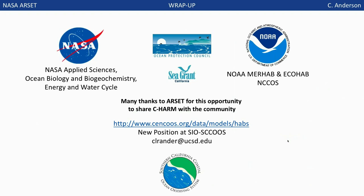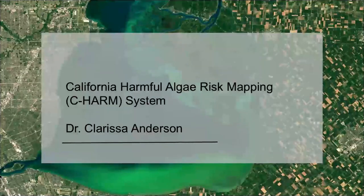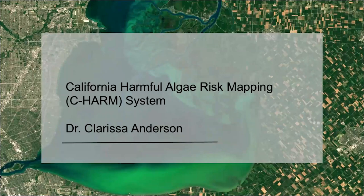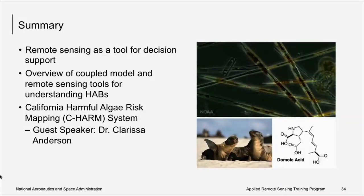Thank you, Dr. Anderson, for your presentation on C-HARM. Today we have talked about remote sensing as a tool for decision support, how remote sensing and geophysical models can be combined to understand a system and build a forecasting method, and we've talked about uncertainty estimates and skill assessment with respect to HAB forecasting systems. As with a weather forecast...